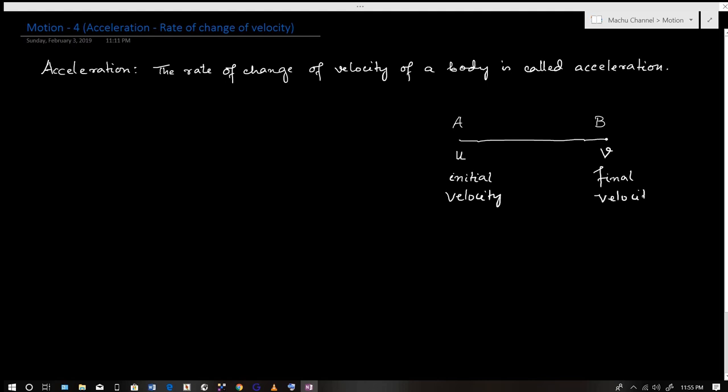The change in velocity over time is expressed mathematically. Acceleration a is equal to change in velocity (final velocity minus initial velocity) divided by time taken.